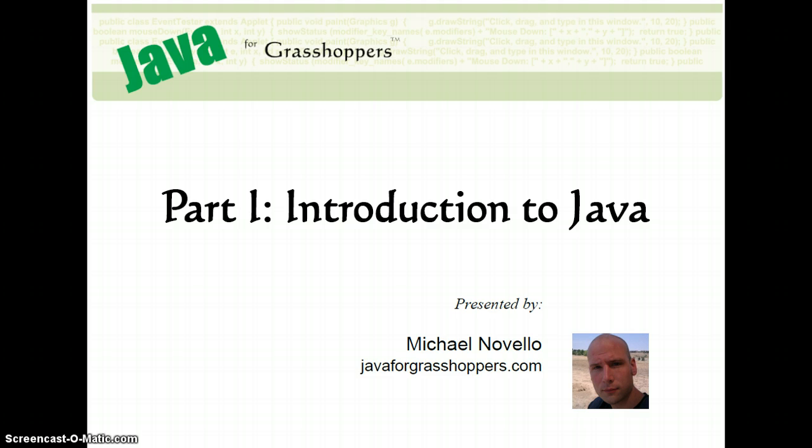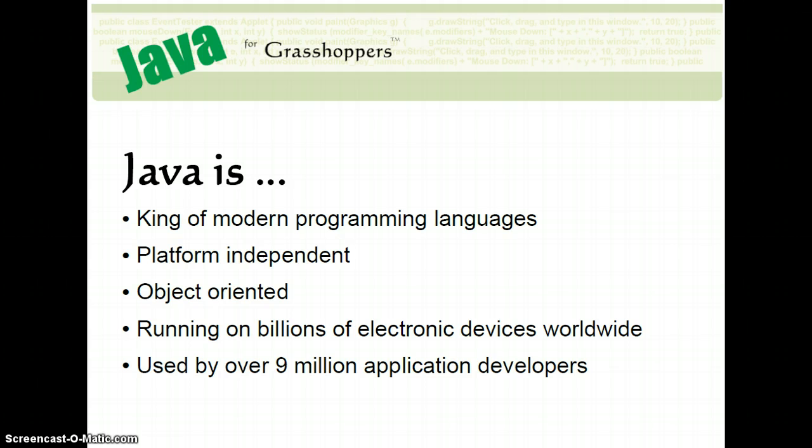Alright, so first of all, what is Java? Java was created back in the 1990s by a company named Sun Microsystems, which is now owned by Oracle. And it was designed to be flexible enough so that your applications could run on all types of electronic devices.